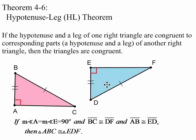Here's our theorem. If the hypotenuse and a leg of one right triangle are congruent to the corresponding parts, a hypotenuse and a leg of another right triangle, then the triangles are congruent.